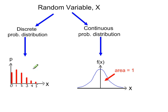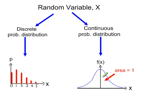For discrete distributions, the random variable x takes fixed, discrete values, and we can see that the distribution looks like a bar chart where the height of any particular bar represents the probability of that value of x. But for continuous probability distributions, it's the area under the graph that represents the probability.